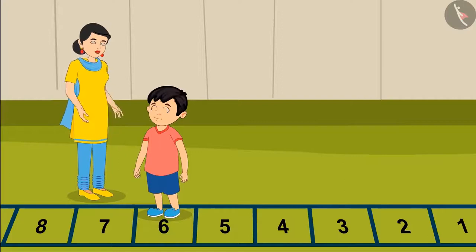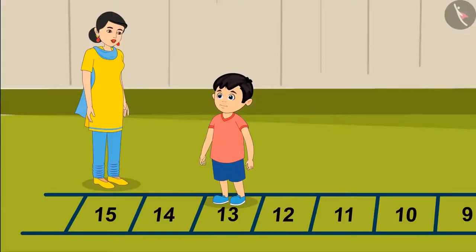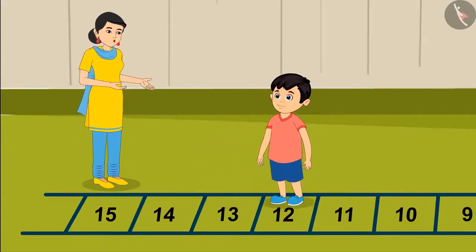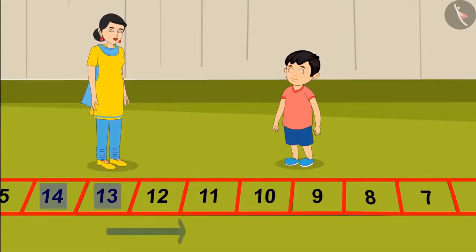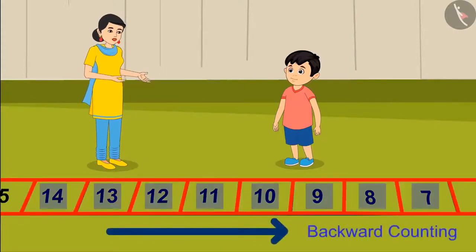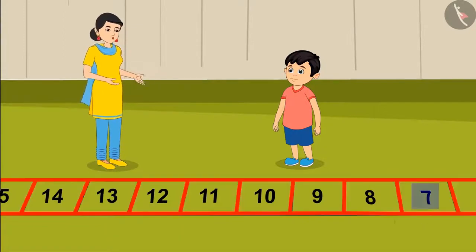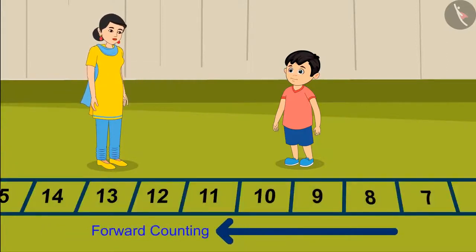Yes, Jhotu, you are right. Now you go and stand on number 13. And now you jump backwards from number 13. Jhotu, which number did you reach now? On jumping backwards from number 13, I have reached number 12. Yes, Jhotu, you are right. When we go back from a number, it is counting a number lesser, or it is called backward counting. And when we move forward from a number, it is counting a number greater, or it is also called forward counting.